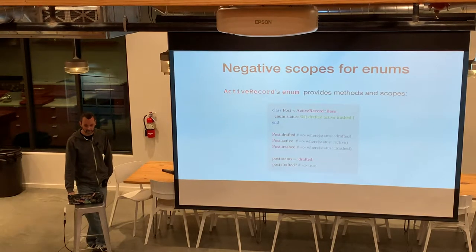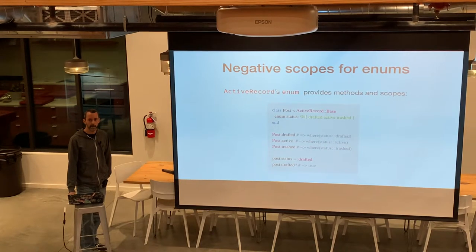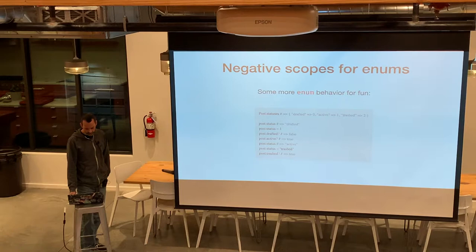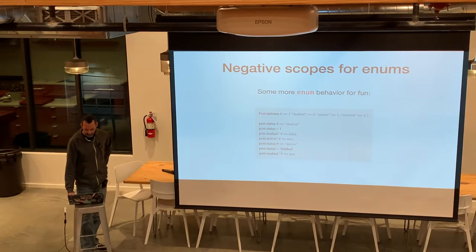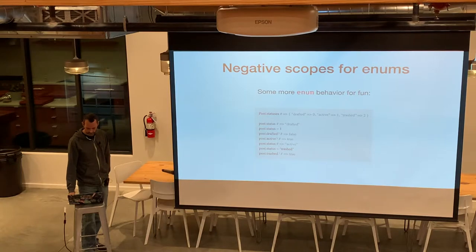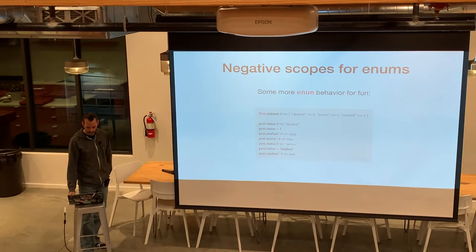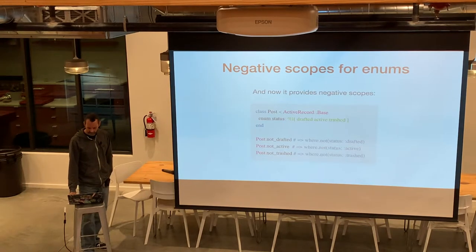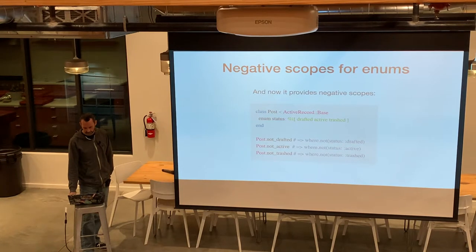You can do Post.status equals the symbol drafted, and then Post.drafted? as a predicate — it ends in a question mark and returns true or false. So Post.drafted? would return true since that's what we just set it to. If you query the value of an enum, it returns a string. You can set the value as an integer or as a string. And if you do Class.statuses, that returns a hash with strings as keys and integers as values. This new feature defines negative scopes for enums, so you can do Post.not.drafted, Post.not.active, and Post.not.trashed, generating queries with where not status.